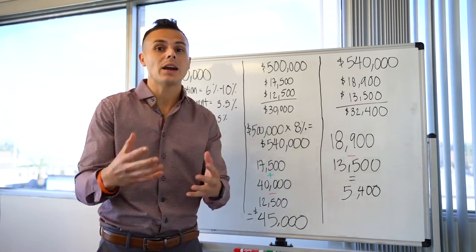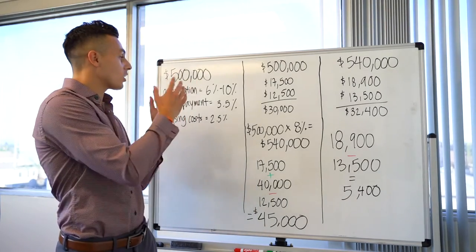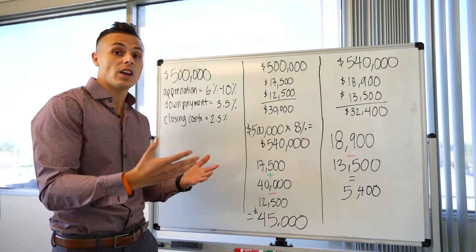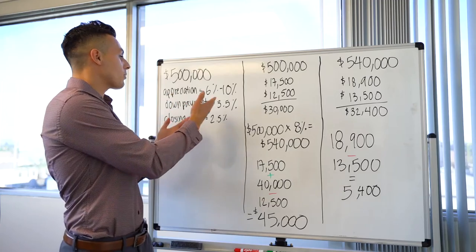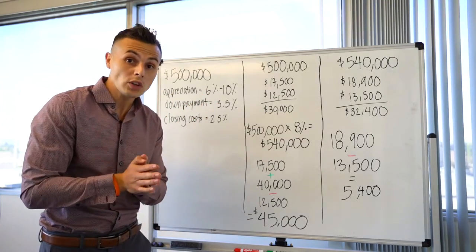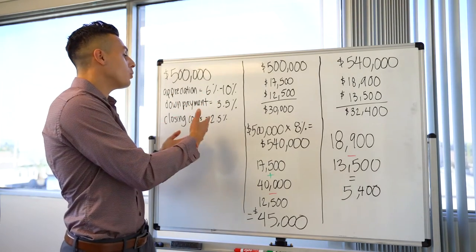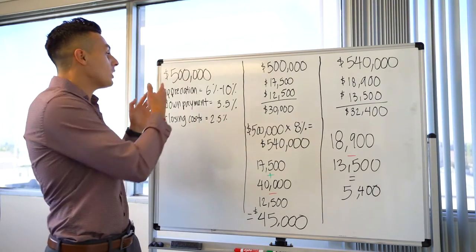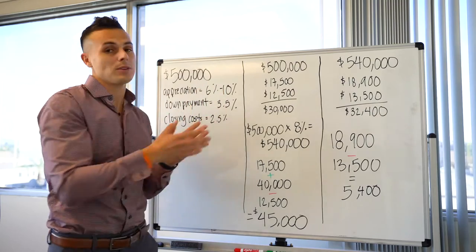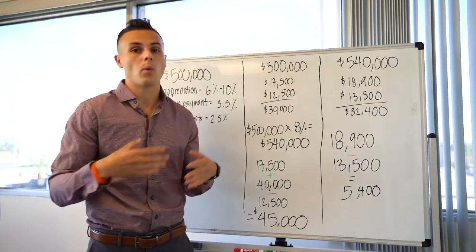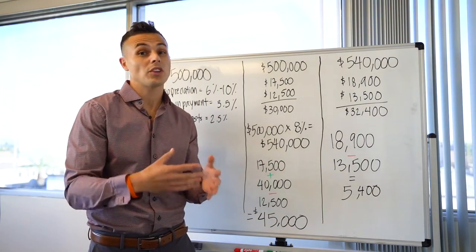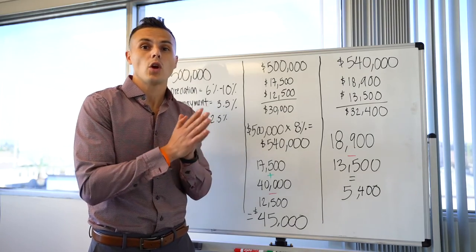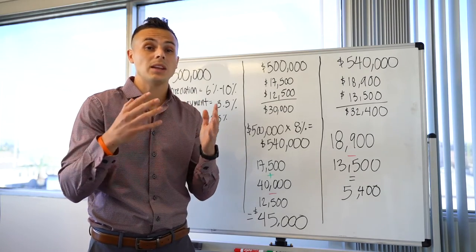I'm going to run through that scenario with a $500,000 home using the FHA rate of 3.5% down, closing costs of 2.5%, which is a little bit more than usual, but I like to play it safe. And then appreciation of 6 to 10%, which is projected from Redfin, Zillow, Realtor.com, and other experts for Los Angeles County this upcoming year.